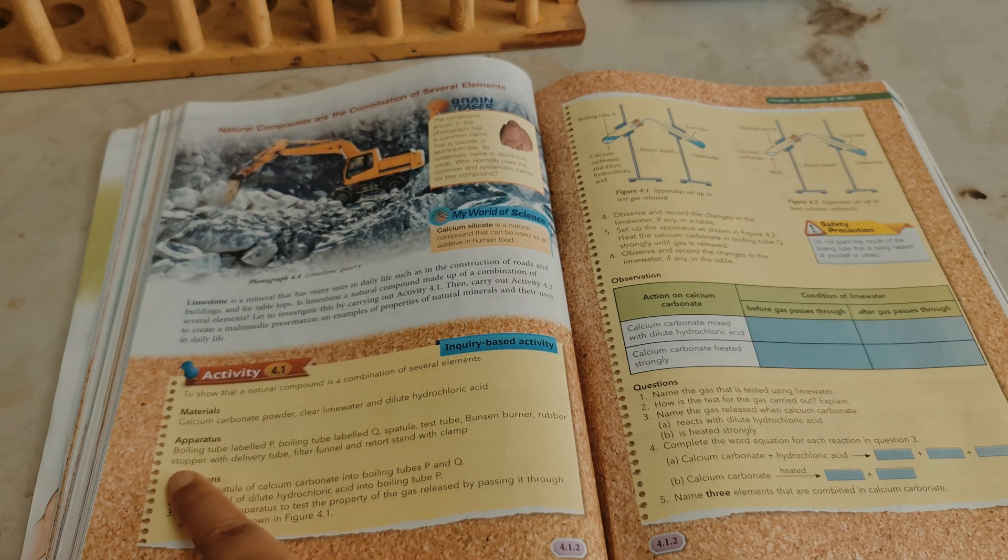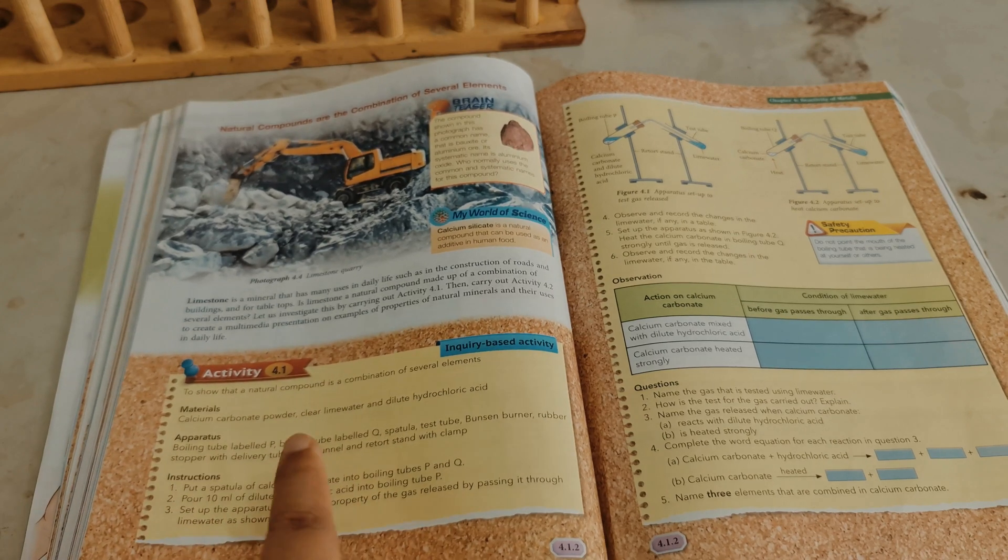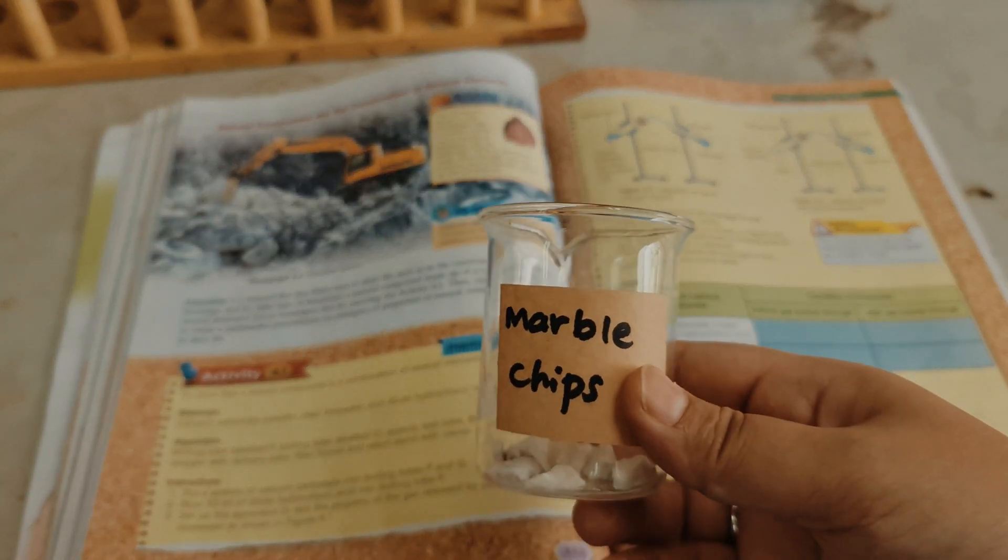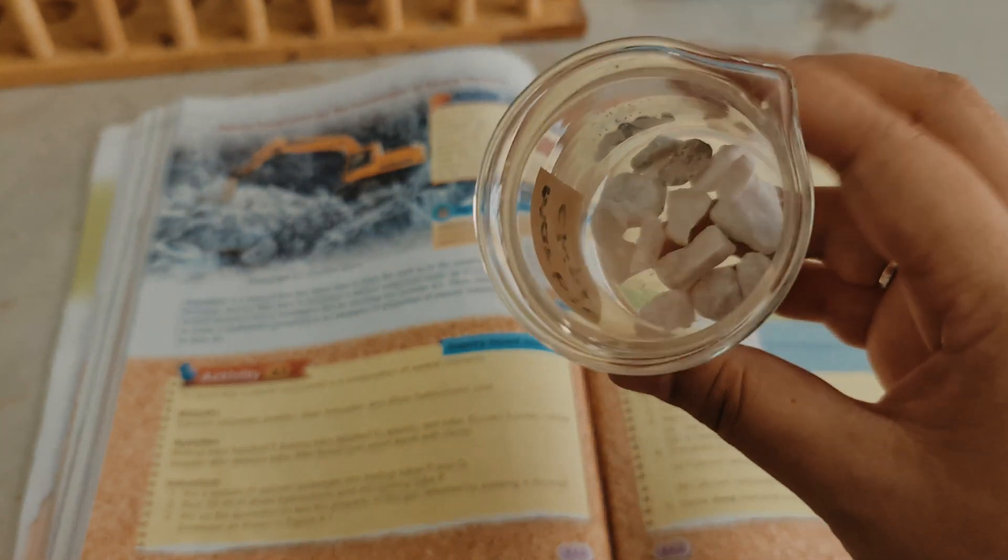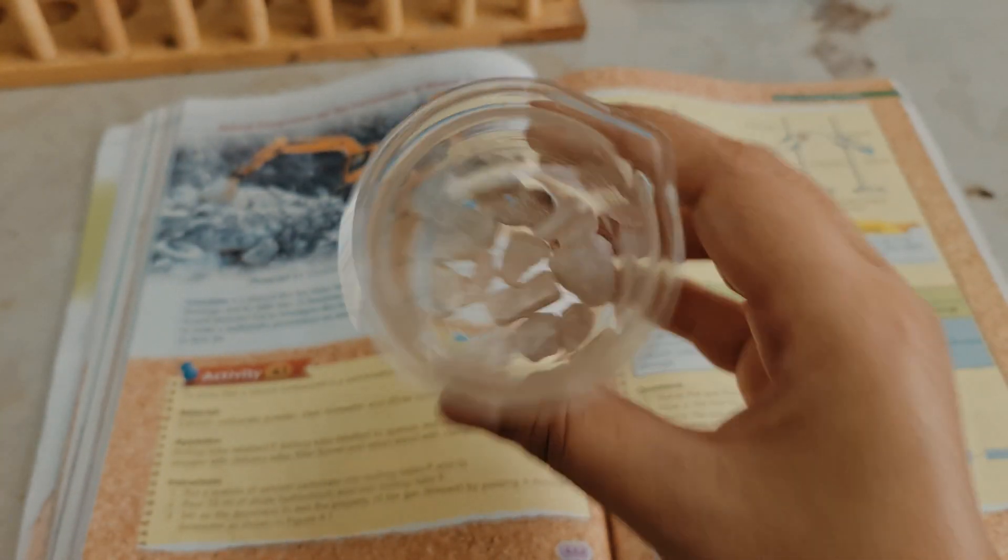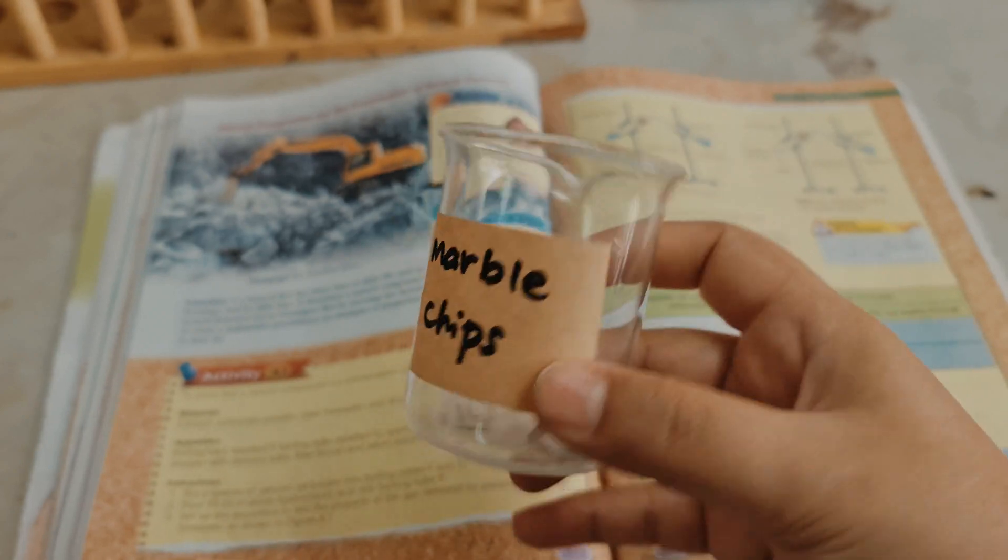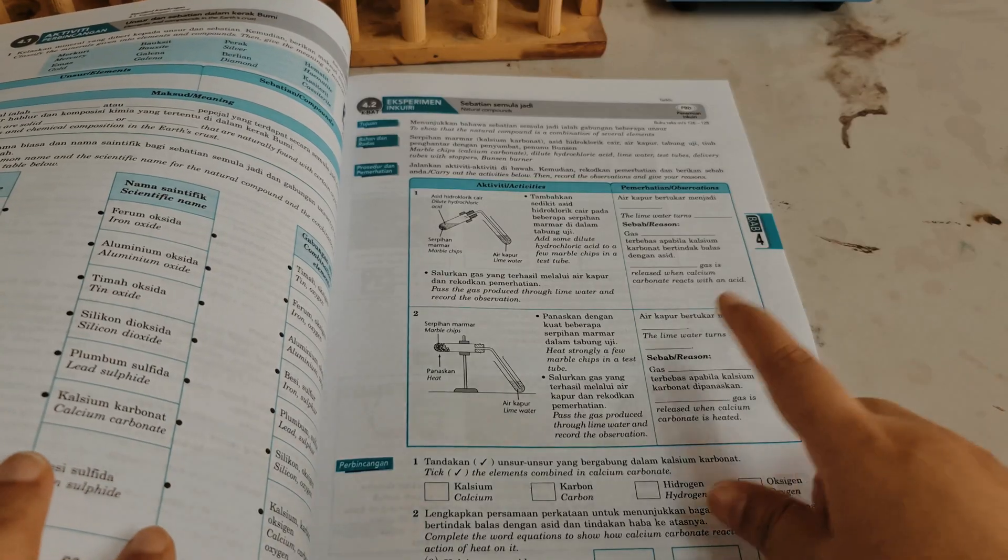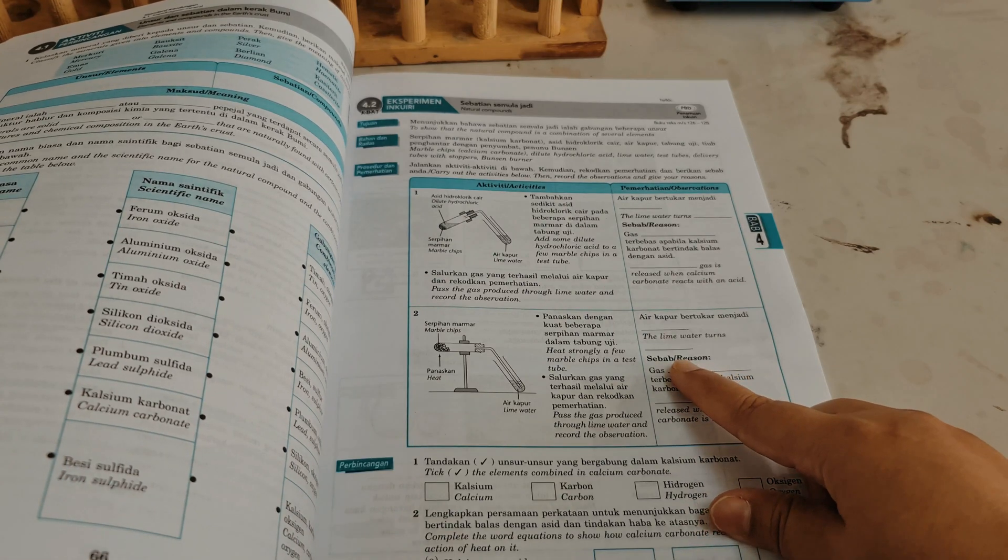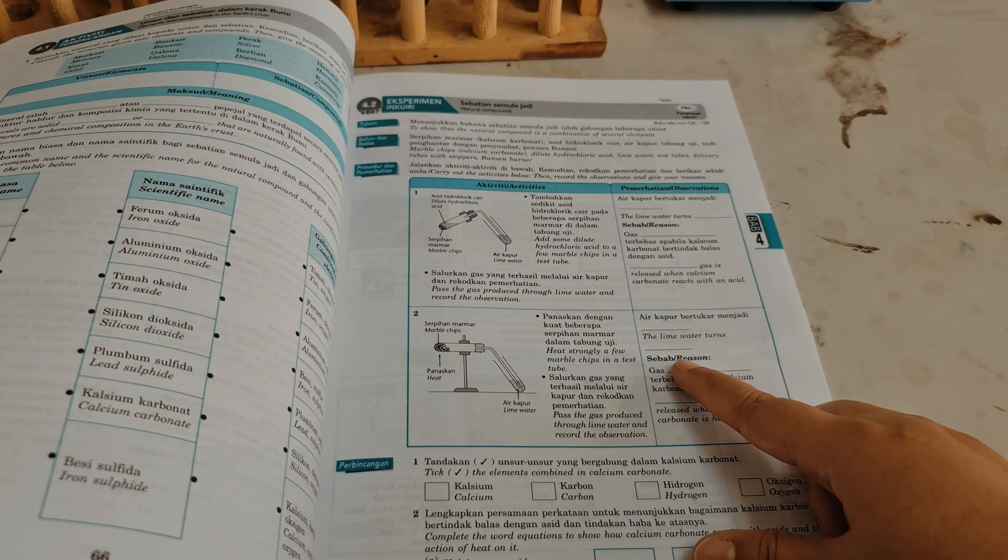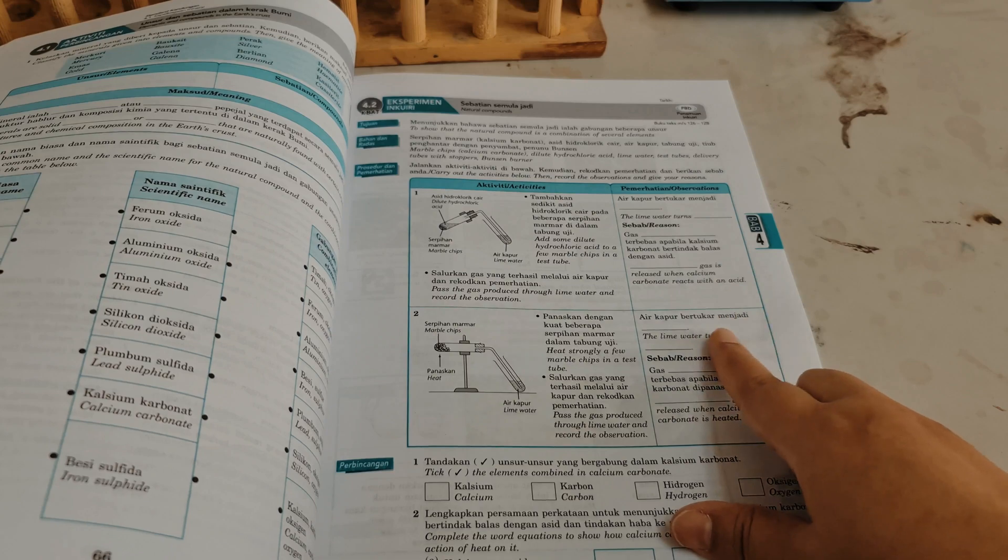So these are the materials and apparatus that you need, but we are going to change the calcium carbonate powder with some marble chips, like so. We are going to follow the steps in the science process skills book because it's going to be a lot easier for our students to use.